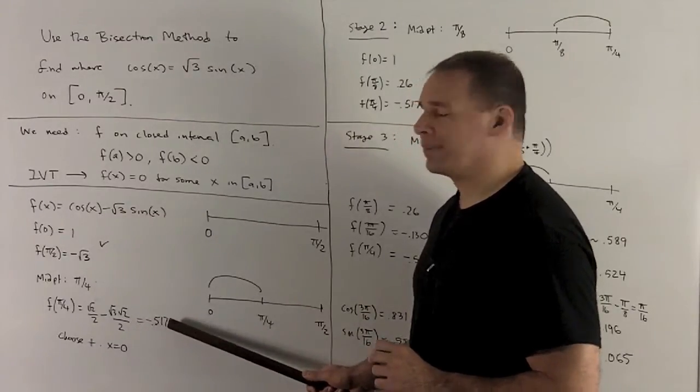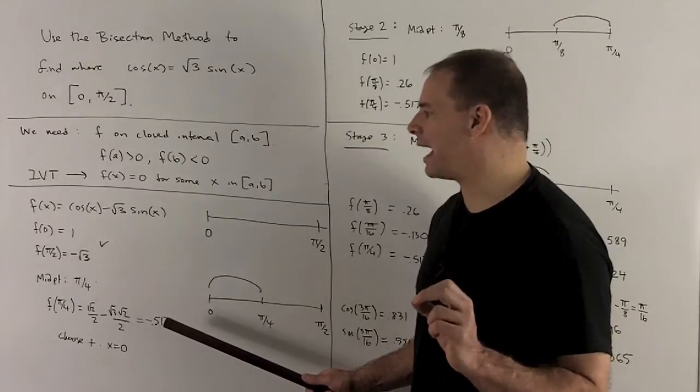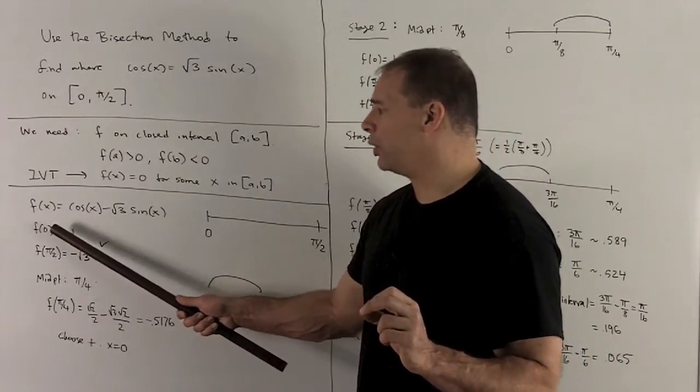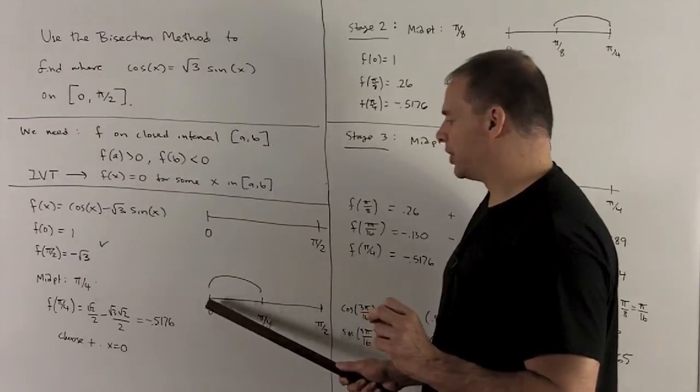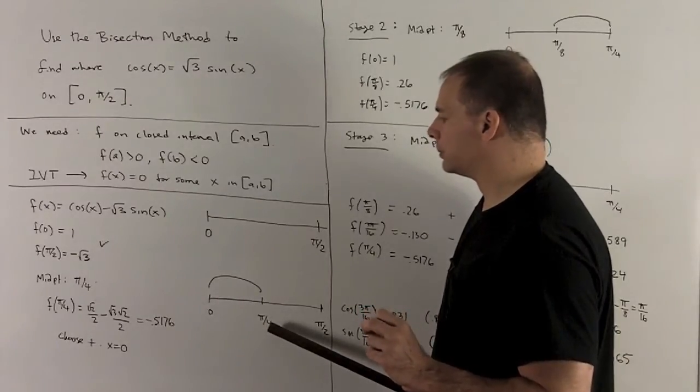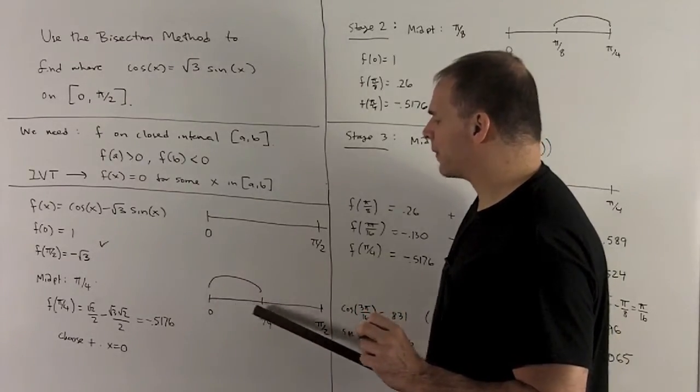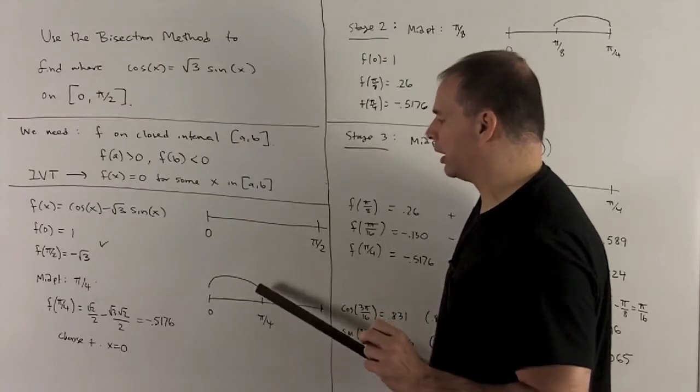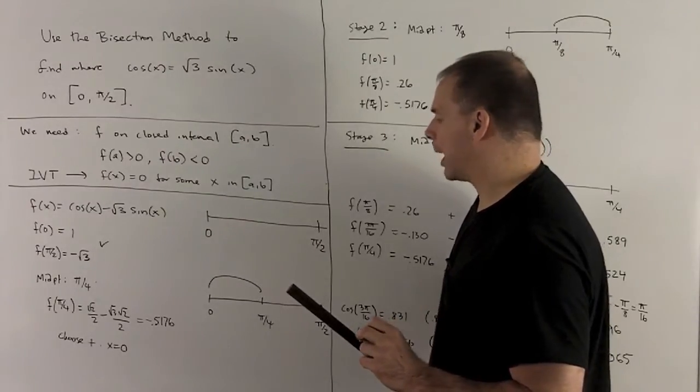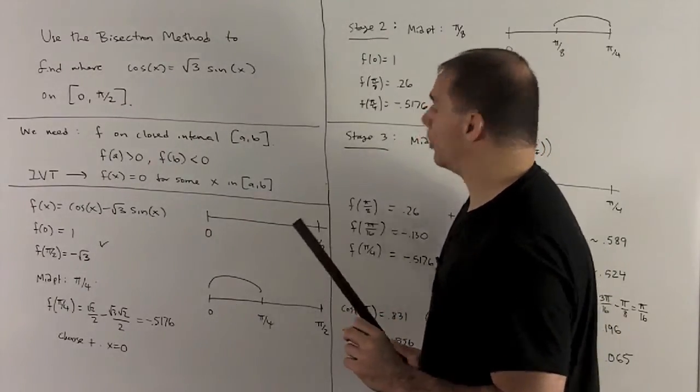So we're going to use the endpoint that has the positive value, f(0) is equal to 1. So our new interval is going to be from 0 to π/4. So we know that the zero for the function is going to live somewhere in here. That's stage one. We go to stage two.